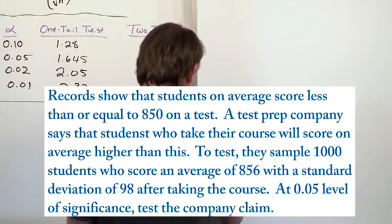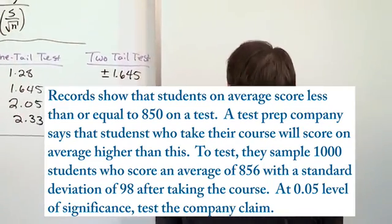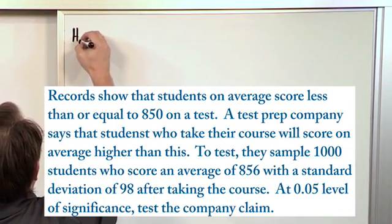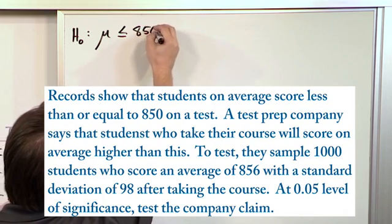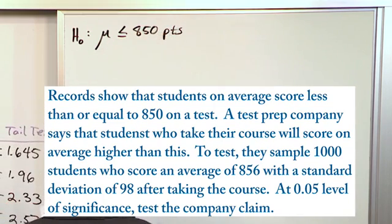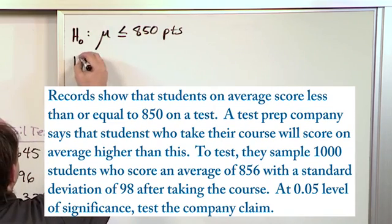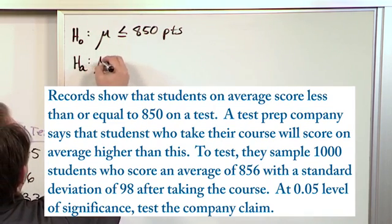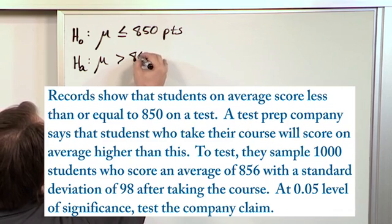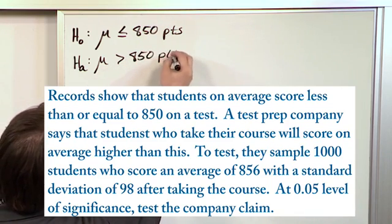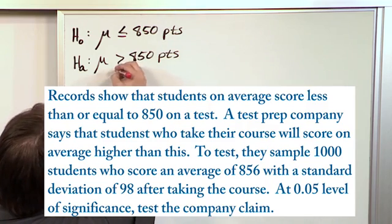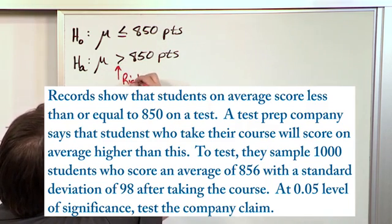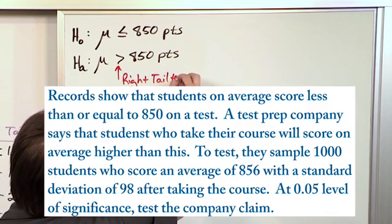Those are basically going to be the null and alternative research hypothesis. The null hypothesis is what the records show, that the average score is less than or equal to 850 points. And the research hypothesis of the alternate is saying, you're going to get a score greater than 850, statistically. Because you have a right hand arrow, you know this is a right tail test.